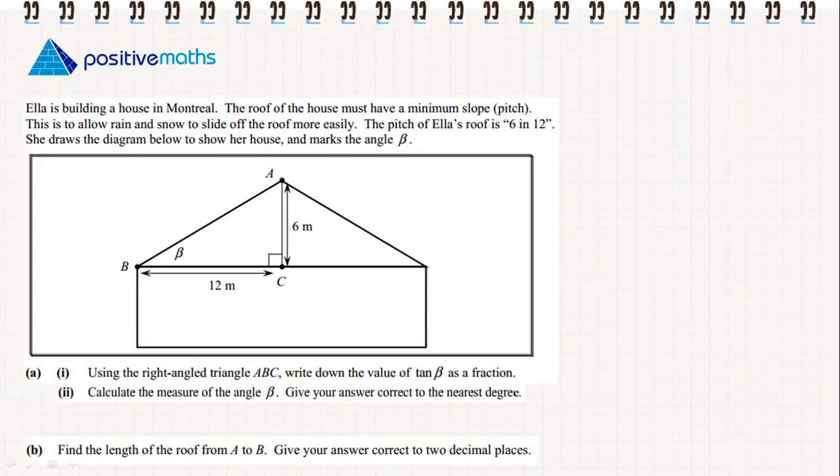Ella is building a house in Montreal. The roof of the house must have a minimum slope or pitch. This is to allow the rain and snow to slide off the roof more easily. The pitch of Ella's roof is 6 in 12. She draws the diagram below to show her house and marks the angle β.